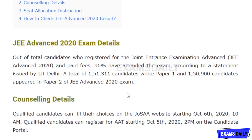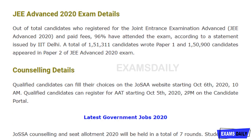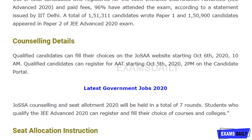It was released by IIT Delhi. They have stated that more than one lakh fifty thousand students appeared for the Paper 1 examination, and one lakh fifty thousand nine hundred candidates appeared for the Paper 2 examination, conducted for the academic year 2020 to 2021.